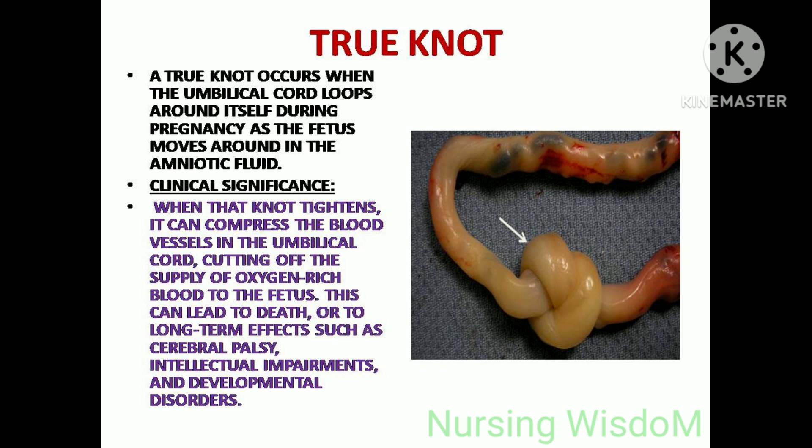True knot: the true knot occurs when the umbilical cord loops around itself during pregnancy as the fetus moves around in the amniotic fluid. Clinical significance: when the knot tightens, it can compress the blood vessels in the umbilical cord, cutting off the supply of oxygen-rich blood to the fetus. This can lead to death or long-term effects such as cerebral palsy, intellectual impairments, and developmental disorders.